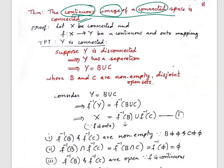So, what is given? Let x be a connected topological space, and let f from x to y be a continuous and onto function. The function is onto because we are taking the image of the entire space — that is why it is continuous and onto. What we have to prove? TPT: y is connected.